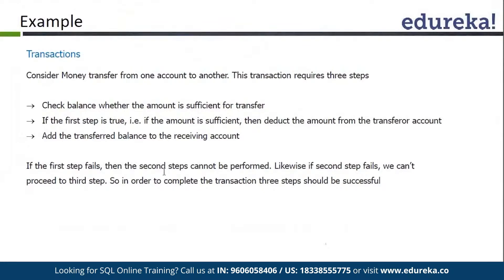For example, we have to transfer money from one account to another. First of all, we check if the amount is sufficient in our account. If it is fine, we deduct the amount and transfer it to the next account. This is a process, a cycle that should run in a transaction so that if anything unexpected occurs, we can roll back and come back to our initial stage.